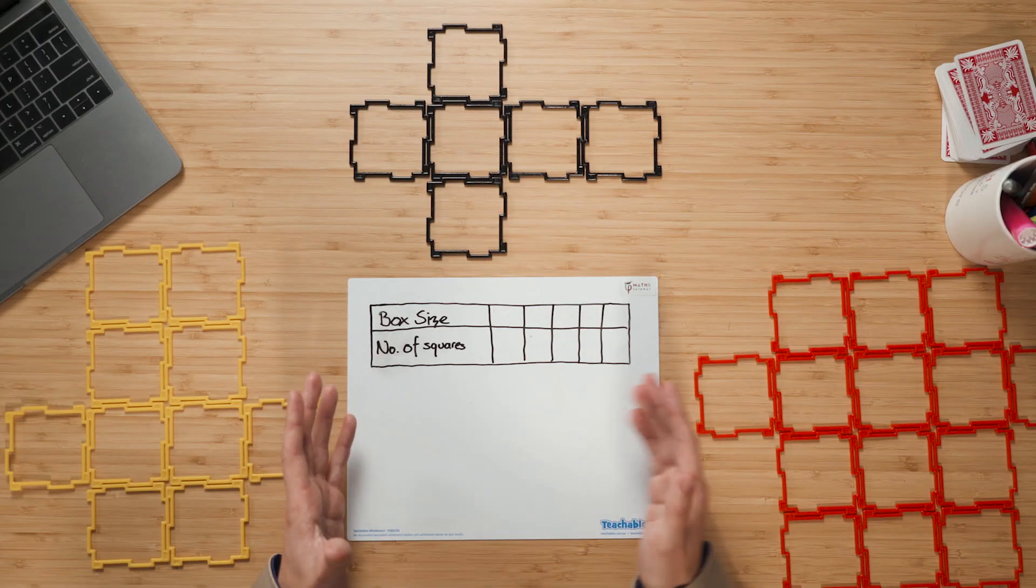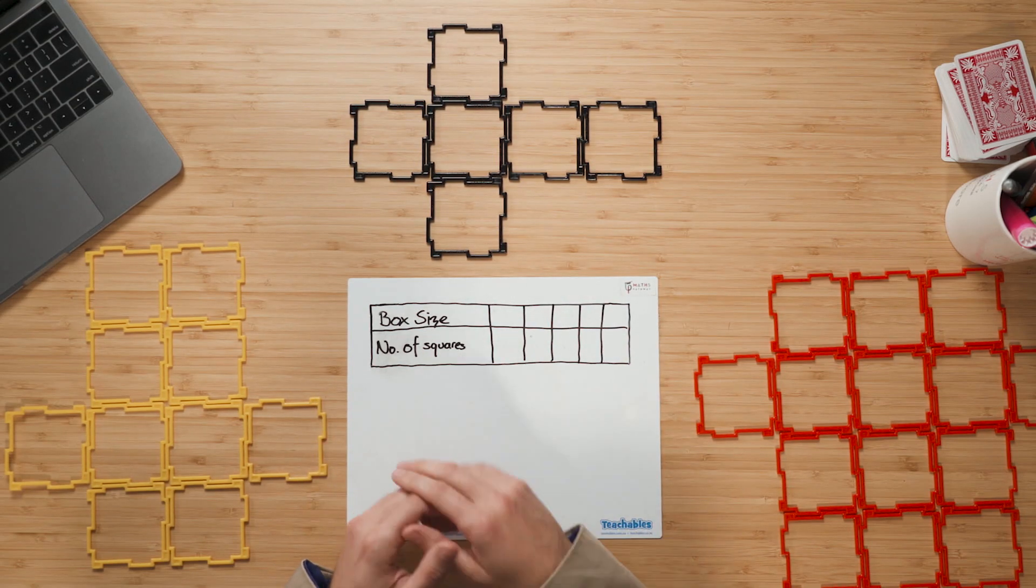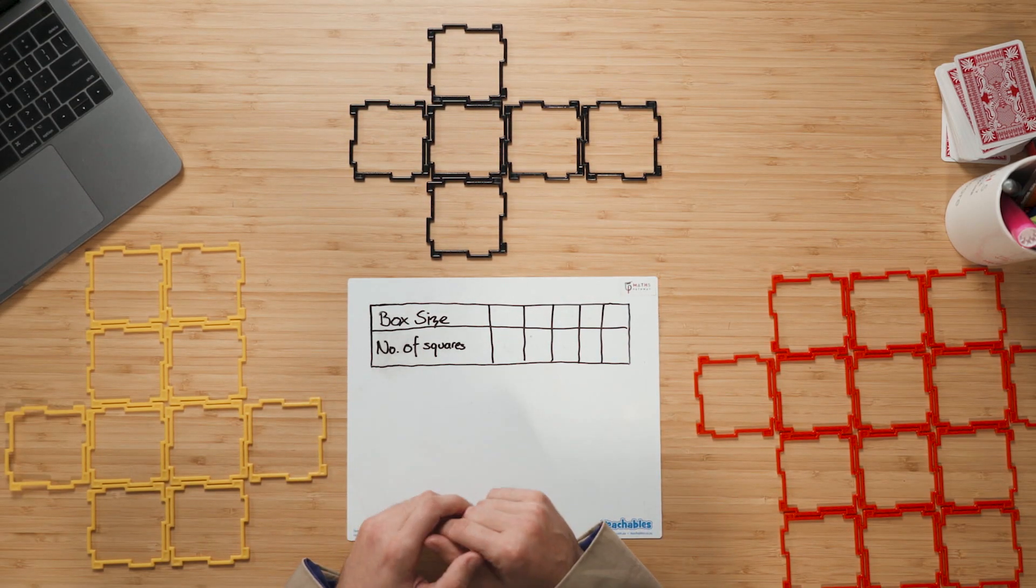And to do this, we're going to use a technique that mathematicians use all the time. And we love getting students to work like mathematicians. And that is to use a table of values like you can see here. So I've drawn out these two rows with some columns as well, and you can see that I've got my box size and my number of squares.